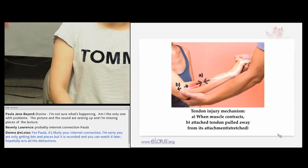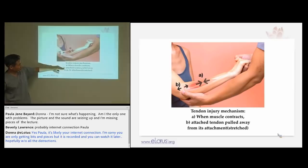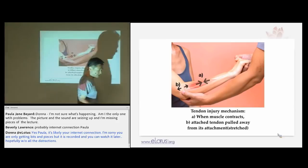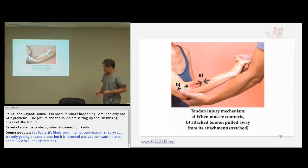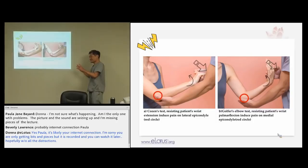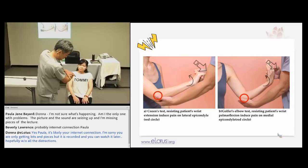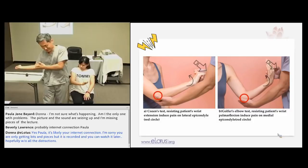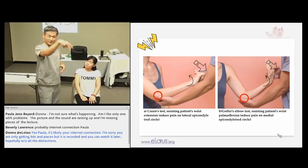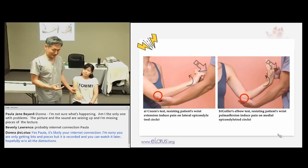The tendon injury mechanism: when the muscle contracts, the attached tendon is pulled away, producing pain — that is the mechanism of injury. This is the Cozen's test for tennis elbow. The golfer's elbow test uses the same principle but on the opposite side. Tennis elbow involves dorsal flexion; golfer's elbow (also called pitcher's elbow) involves plantar flexion — the repeated plantar flexion creates a wound on the medial epicondyle tendon attachment. Test golfer's elbow the same way: turn the arm and resist flexion of the wrist to the inside — pain should be produced at the medial epicondyle.